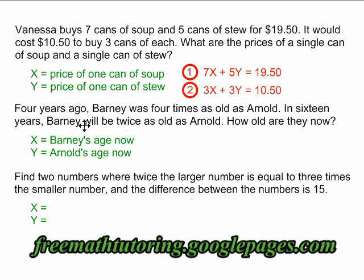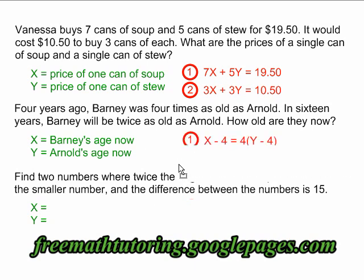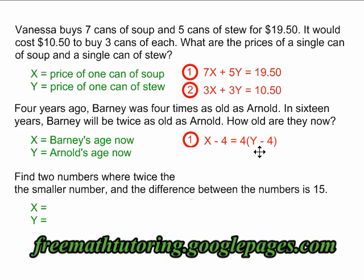Here again, the first sentence gives us all the information we need for our first equation. Barney's age four years ago is represented by x minus four. The word 'was' is the equal sign. 'Four times as old as' means something has been multiplied by four, so I put a four and a bracket. 'As old as Arnold' means Arnold's age, but again, it's four years ago, so I have to express Arnold's age as y minus four, which gives his age four years ago.